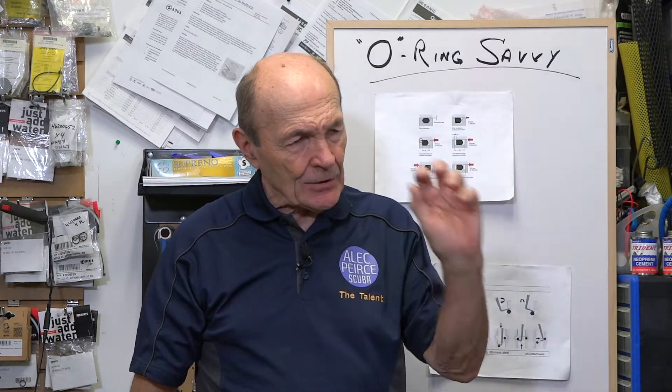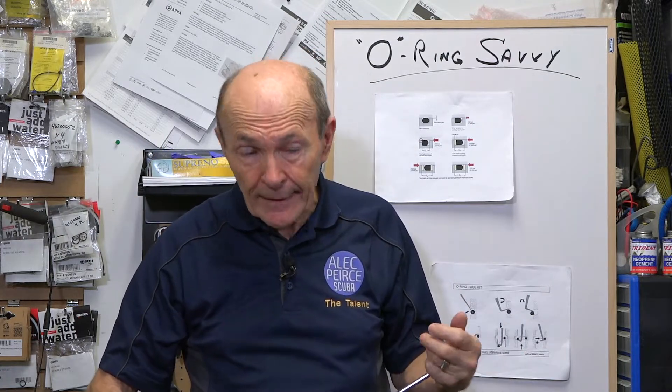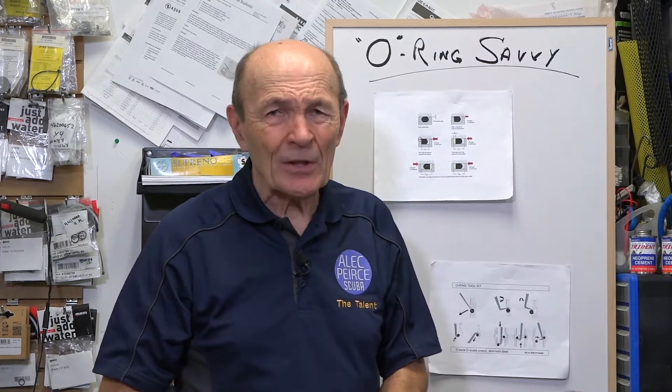Generally speaking, O-rings in a scuba system are there to prevent leaks of water or air. What that means is there's something over here that has air or water in it, and there's something over here that doesn't want that air or water to get to it. And those two things fasten together. So you need something to keep the high-pressure air or water from getting through. That's what an O-ring does. How does that actually work? It sounds like it's just a simple seal. It's not really that simple.